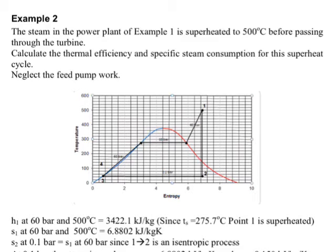We now look at example 2. In this situation, the steam power plant of example 1 is superheated to 500°C before passing through the turbine.